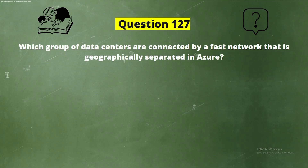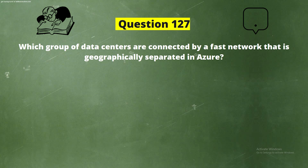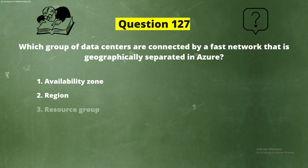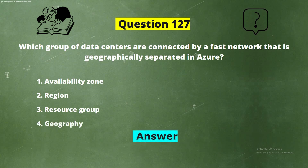Question 127. Which group of data centers are connected by a fast network that is geographically separated in Azure? The options are: Option 1, Availability Zone; Option 2, Region; Option 3, Resource Group; Option 4, Geography. And the correct answer is Option 2, Region.